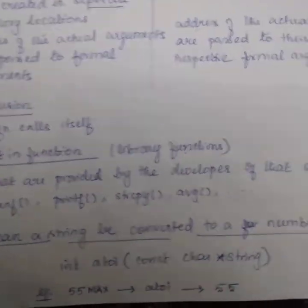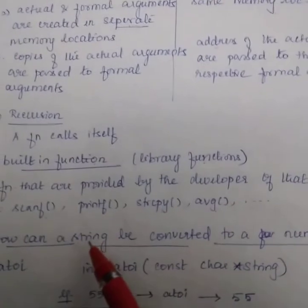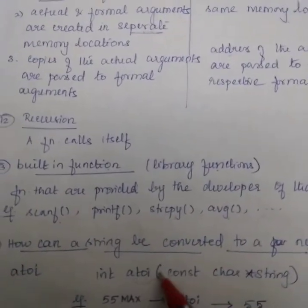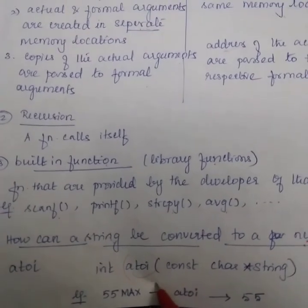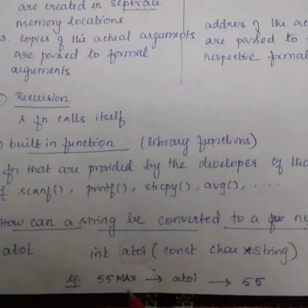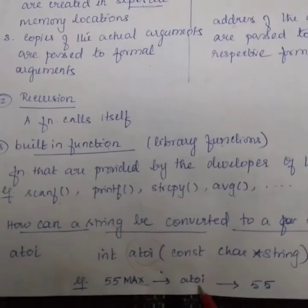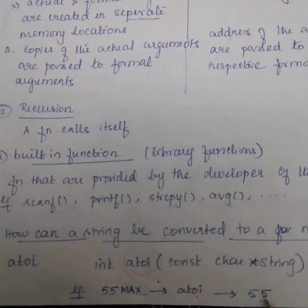How can a string be converted to a number? To convert a string into a number, we use atoi function. After using this function, only number will be displayed.